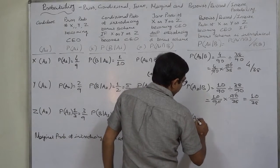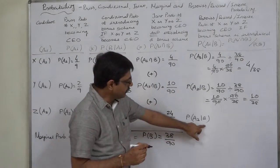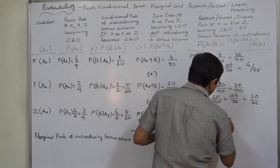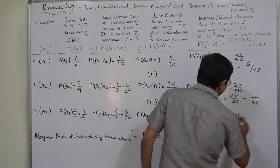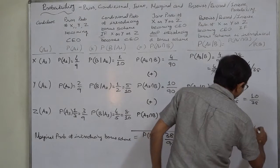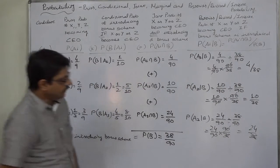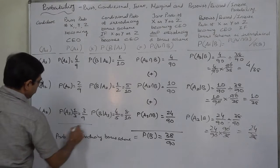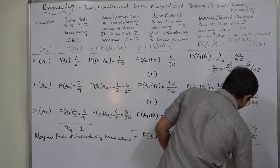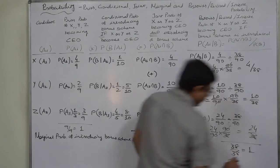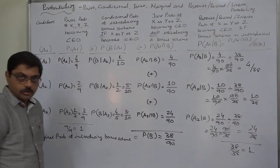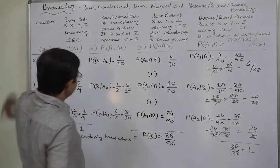The third posterior probability, P(A3|B) — that is, Z becomes CEO if the bonus scheme has been introduced — equals P(A3 ∩ B) divided by P(B): 24 by 90 divided by 38 by 90, which equals 24 by 38. These three are the posterior probabilities. If we verify, the summation of the three posterior probabilities must equal 1, and in this case they do, so there is no mistake in the calculation. We use the tabular approach to find the posterior, revised, or inverse probability of the cause events. That's it. Thank you very much.